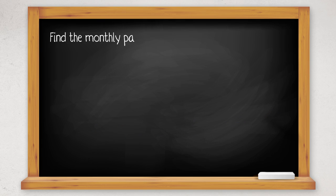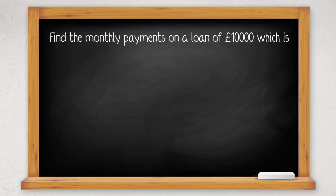Let's find the monthly payments on a loan of £10,000 borrowed over 7 years at an APR annual percentage rate of 6.7%.